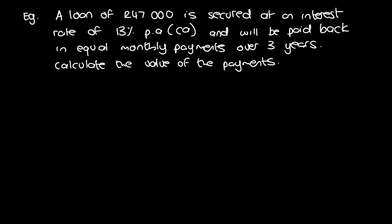We have an example of a loan of 47,000 secured at an interest rate of 13% per annum compounded annually, and it will be paid back in equal monthly payments over three years. We need to calculate the value of the payments. These examples are just for how you input them into your financial calculator.